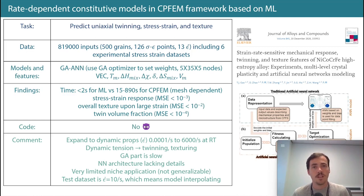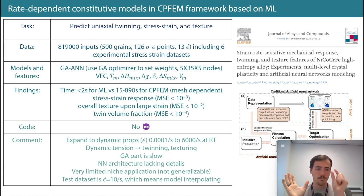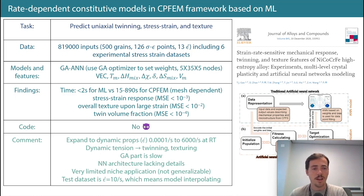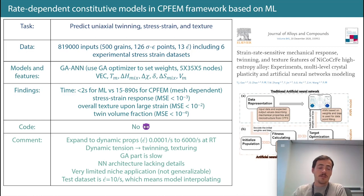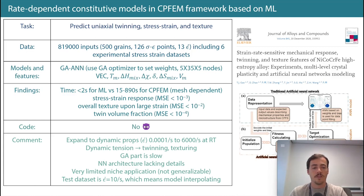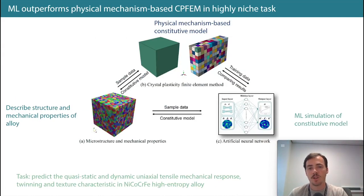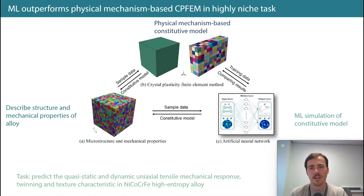Sure, it proves the concept that given a ton of data on either side of a strain rate, ML can fill in the gap faster than crystal plasticity finite element modeling. But to what end? The genetic algorithm training was also really slow, and I don't think they included that in the time calculation. I was initially excited about this paper, but the more I read it, the less useful it seemed in practice.